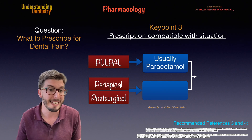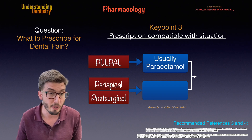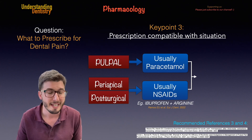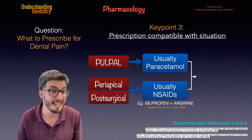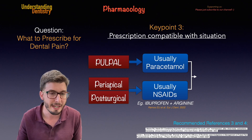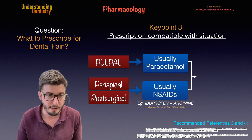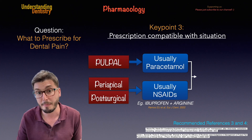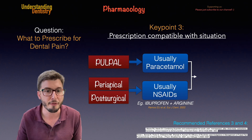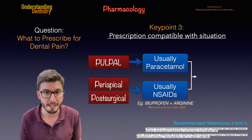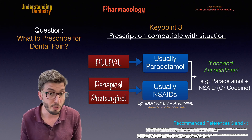For pulpal pain, the most common option is paracetamol. For periapical or post-surgical pain, we usually need something stronger because of the origin of the pain, which is why we usually start with NSAIDs. Ibuprofen is considered the best one to control pain, especially when associated with arginine — a salt that enhances the absorption of ibuprofen — as described by Ramos and collaborators in the European Journal of Dentistry.